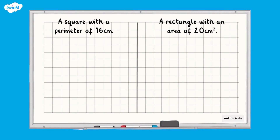Now it's your turn. Using the squared paper to help you, can you calculate what each side will be in these shapes? A square with a perimeter of 16 centimetres, and a rectangle with an area of 20 centimetres squared. Remember that the area is the total squares covered by the shape. Pause the video here whilst you work out your answers.